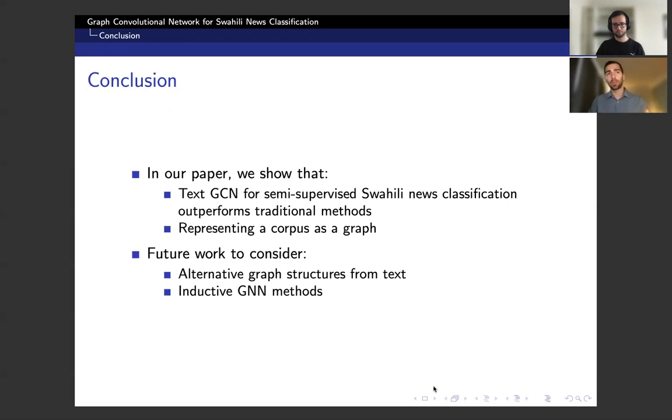For future work, an alternative graph structure could be considered. For example, a document-to-document similarity feature could be added to the graph. Additionally, inductive GNN methods could be considered in which previously unseen nodes can be classified in testing.